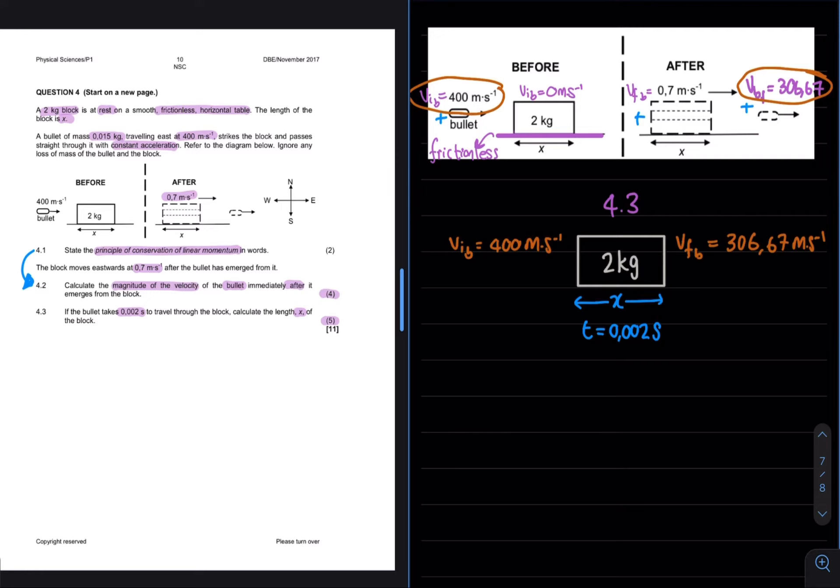Seeing as we were also given the time that it takes the bullet to move through the block, we can make use of your equations of motion in order to solve the deceleration that the bullet experiences, and then also the distance of the block. Making use of your first equation of motion, we can solve the acceleration of the bullet.